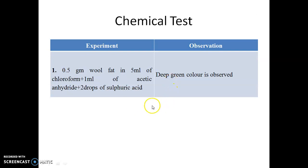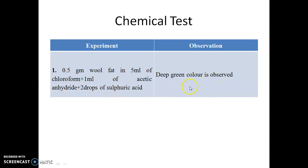Chemical test: To 0.5 gram of Ulfat, add 5 ml of chloroform to dissolve it, then add 1 ml of acetic anhydride and 2 drops of sulfuric acid. A deep green color is observed, which is due to the presence of cholesterol.